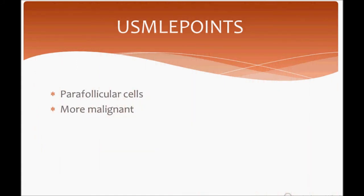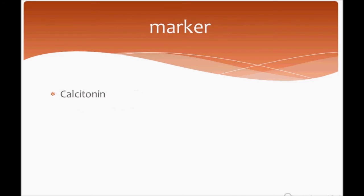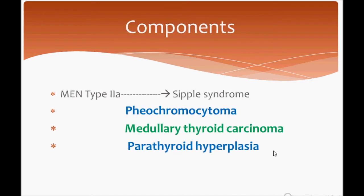Medullary thyroid carcinoma arises from parafollicular cells and is malignant. The tumor marker to remember is calcitonin. It is a component of MEN type 2a syndrome, which consists of pheochromocytoma, medullary thyroid carcinoma, and parathyroid hyperplasia — you can remember this easily as all the glands being involved.